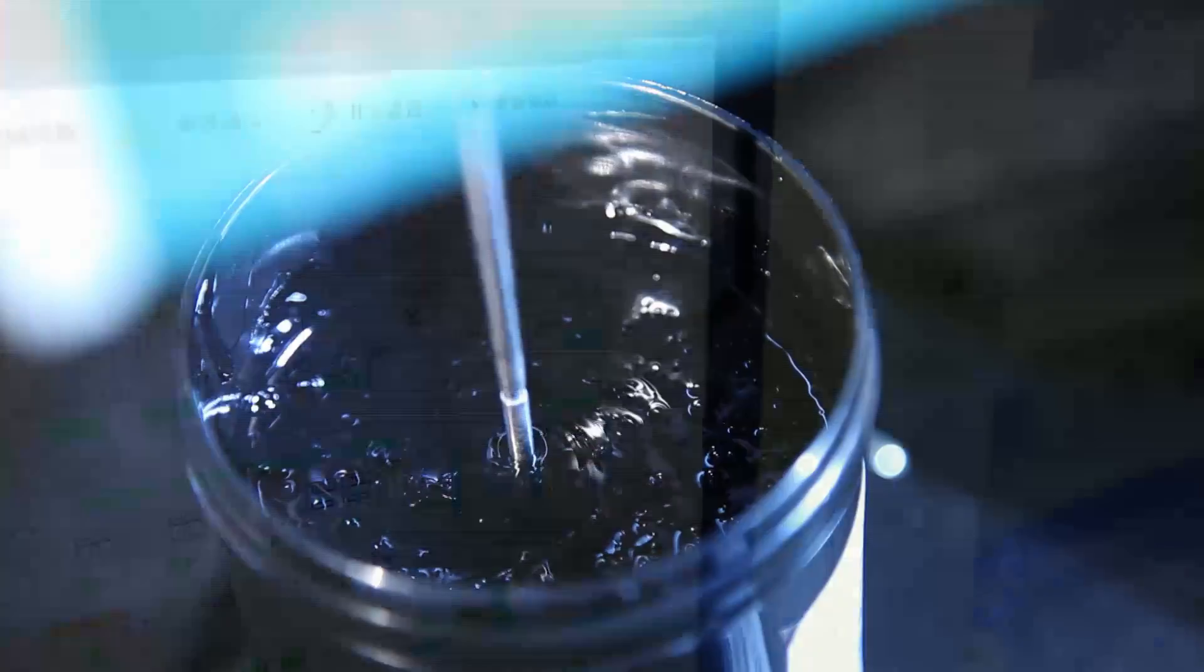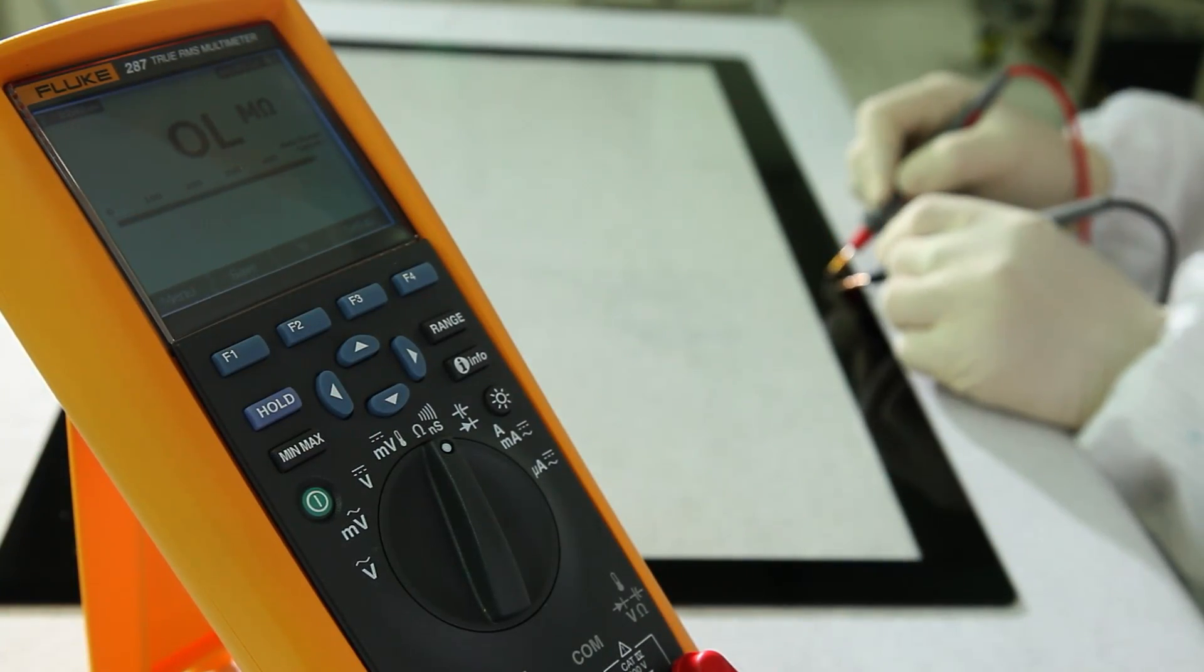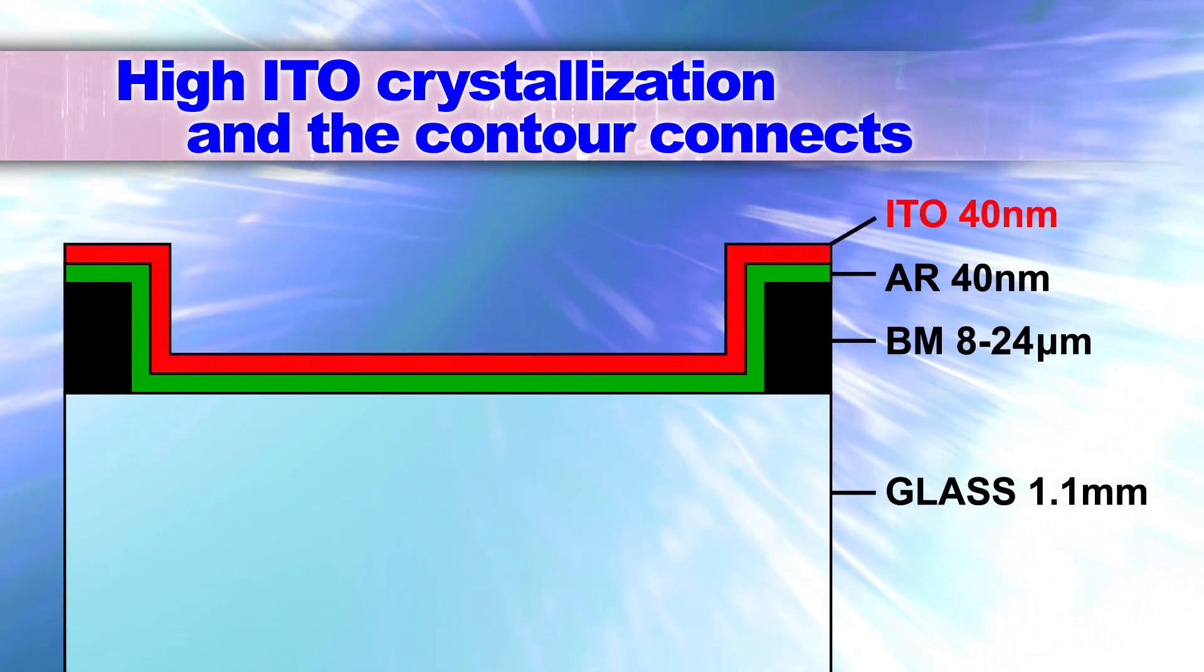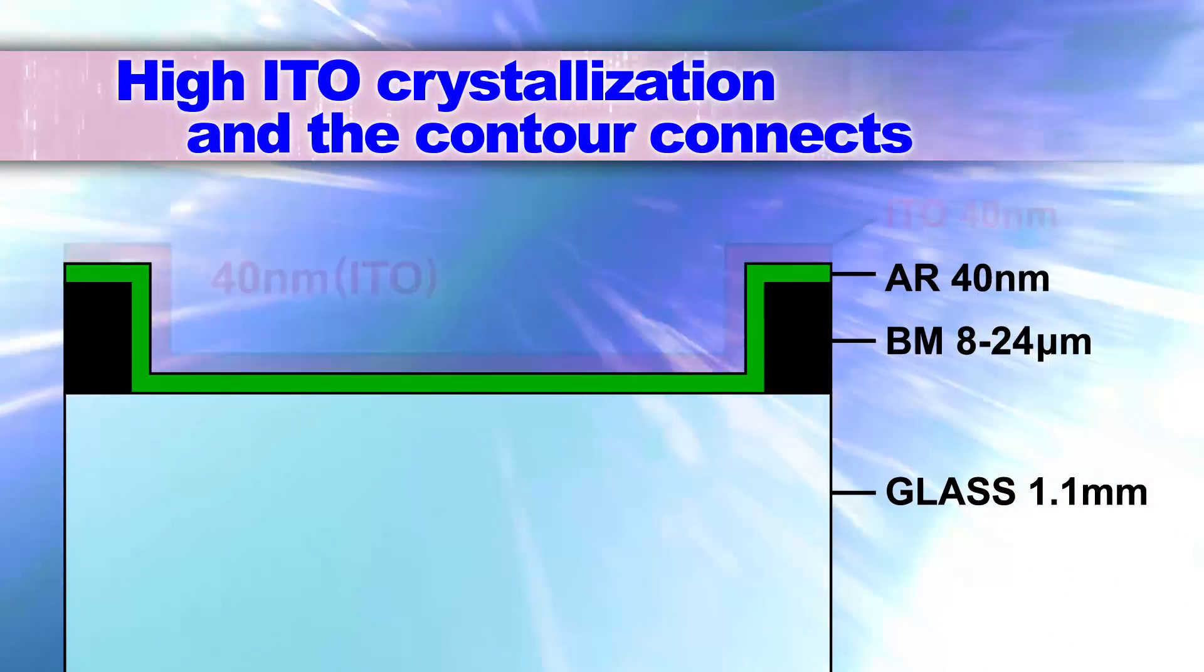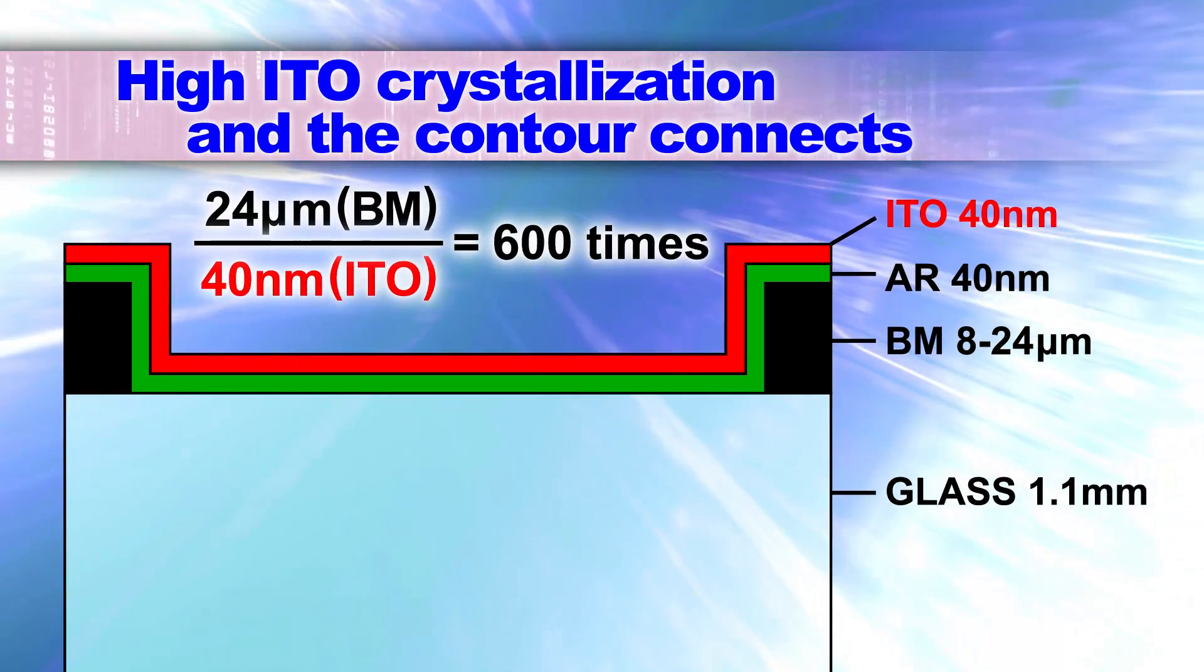Fortran BM special sustains 500 degrees Celsius temperature without carbonization and keeps electrical insulation. The special OGS process provides high ITO crystallization and the contour connects.